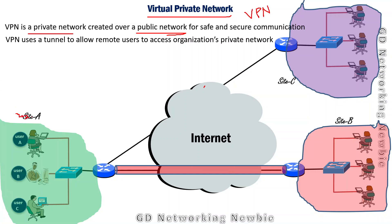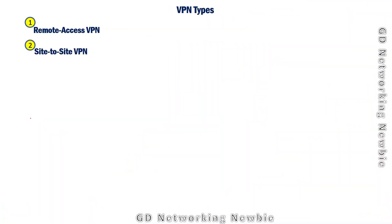VPN uses a tunnel to allow users or organizations to access each other using a private connection. In the same way, site A to site C can have a private network created with the help of VPN, giving us a tunnel for communication. With this, we have two types of VPN: remote access VPN and site-to-site VPN.